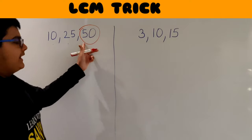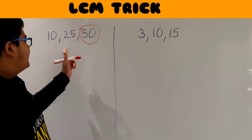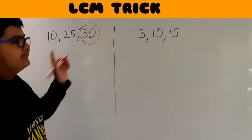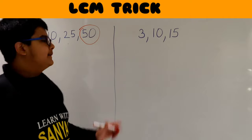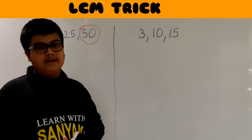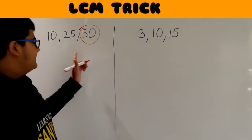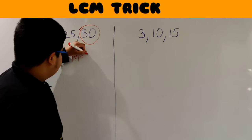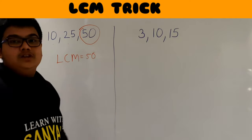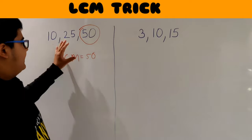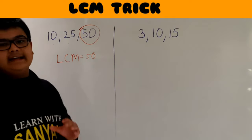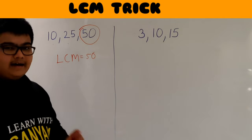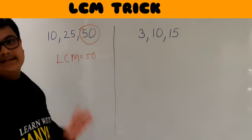So 10 is a factor of 50 because 10 × 5 = 50, and 25 is also a factor of 50 because 25 × 2 = 50. This means both numbers are divisible by 50, so 50 is our LCM. LCM of 10, 25, and 50 is 50. You just check which is the largest number, then check whether all other numbers are divisible by it — if they are, that number is your LCM.